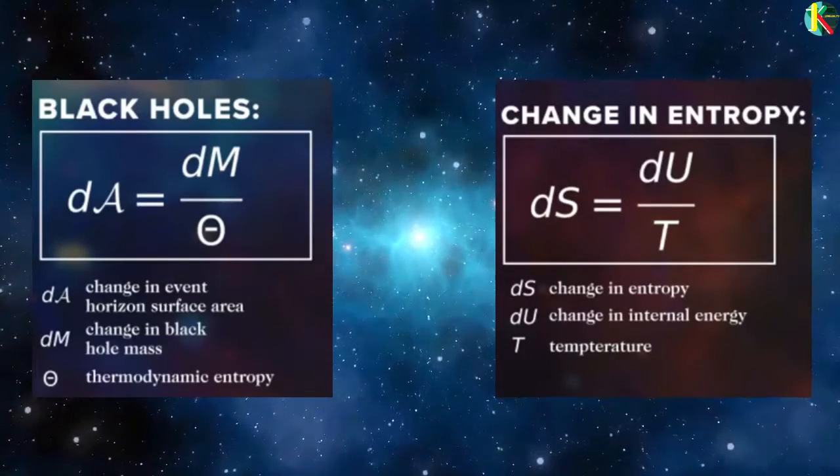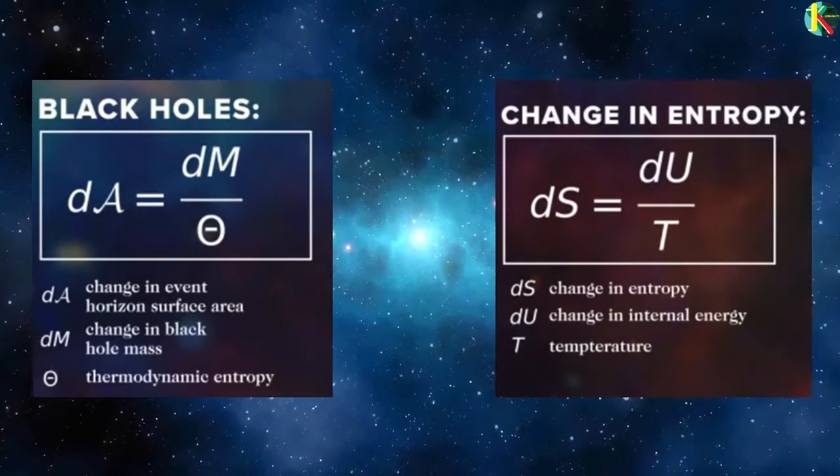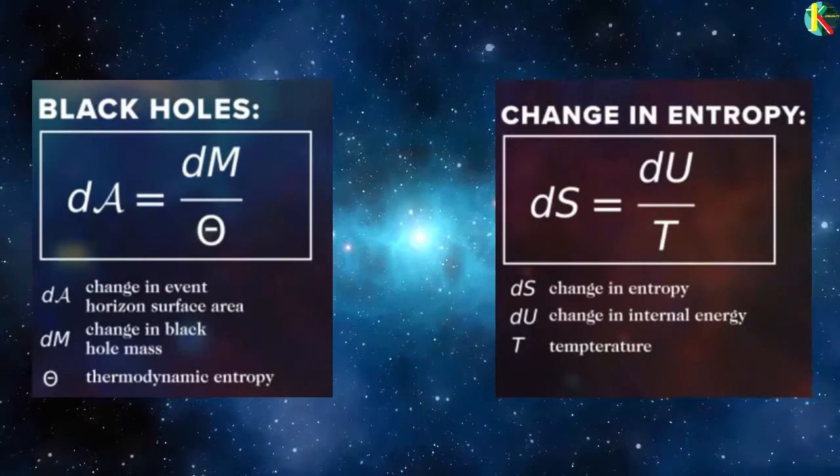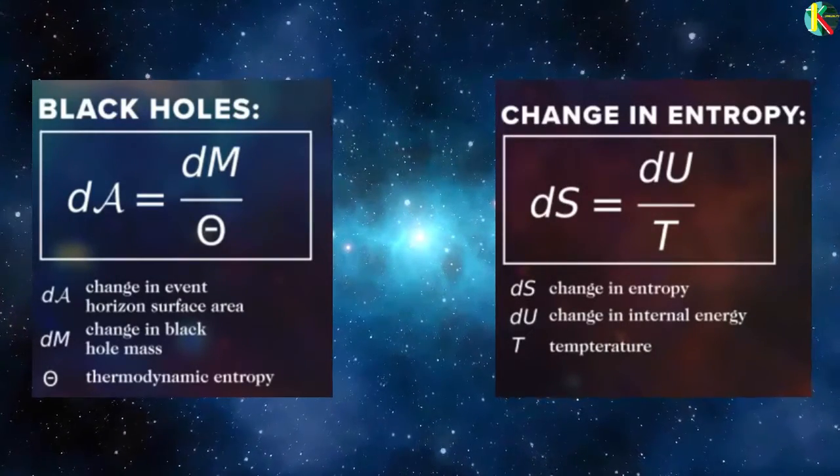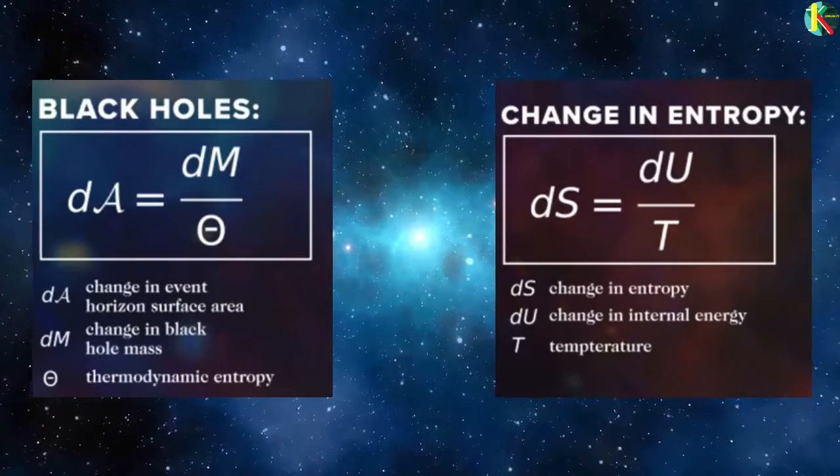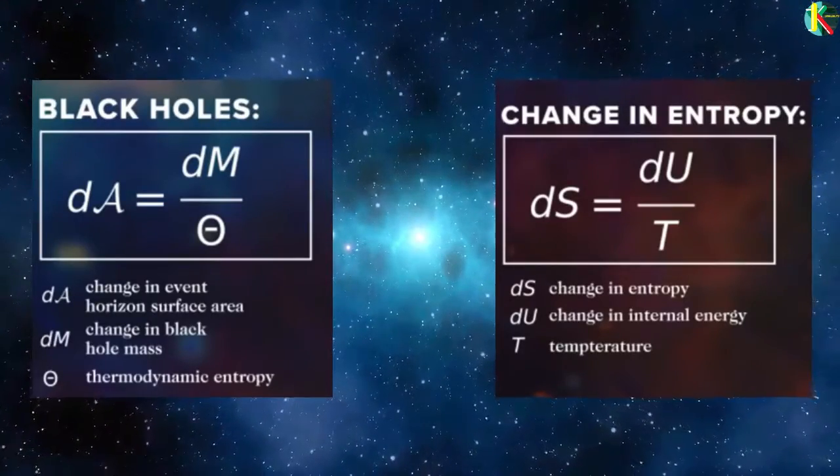We just need to replace change in entropy and internal thermal energy with change in black hole surface area and black hole mass respectively. We could also add the work done when we extract energy from the black hole and it looks exactly same as the equation for the work extracted from a thermodynamic system.